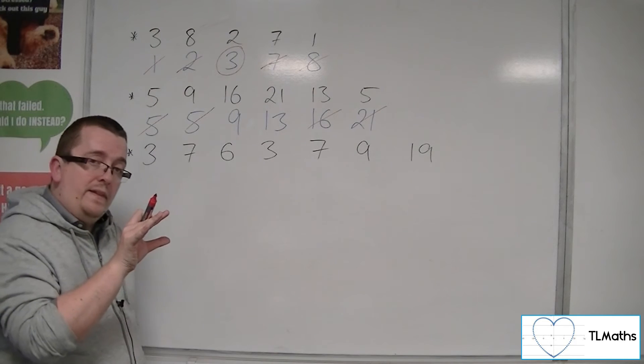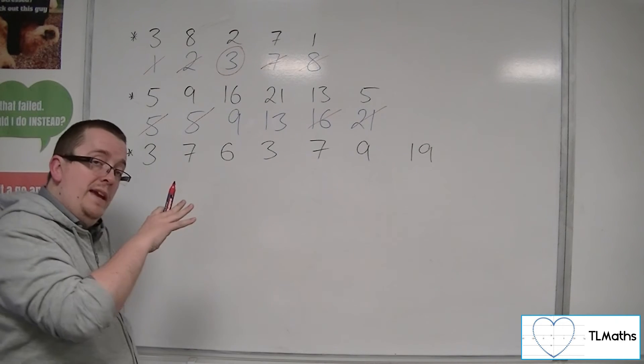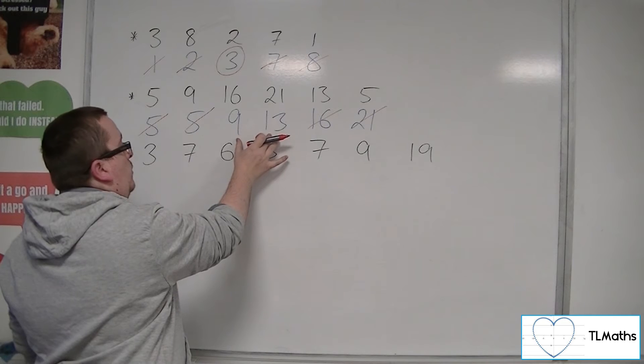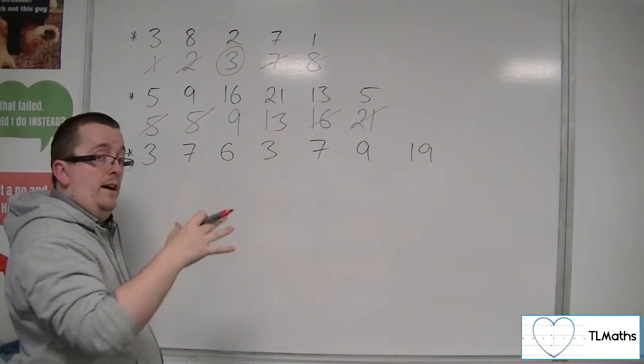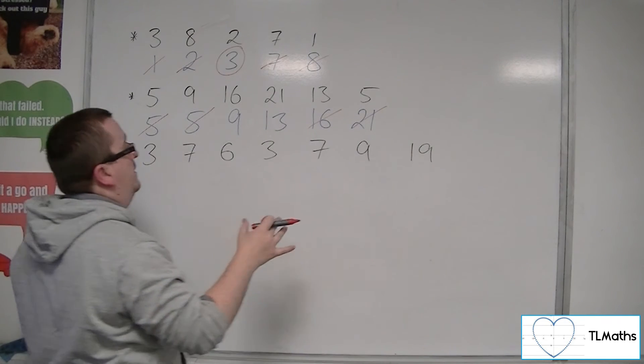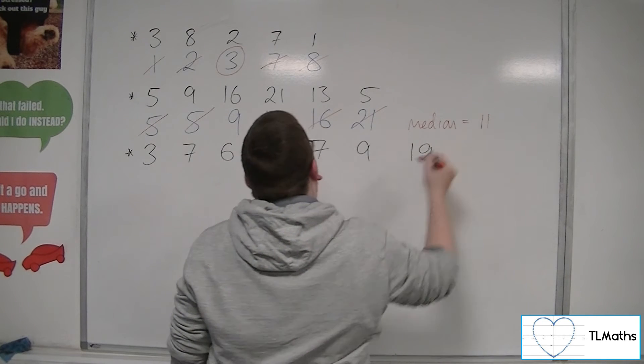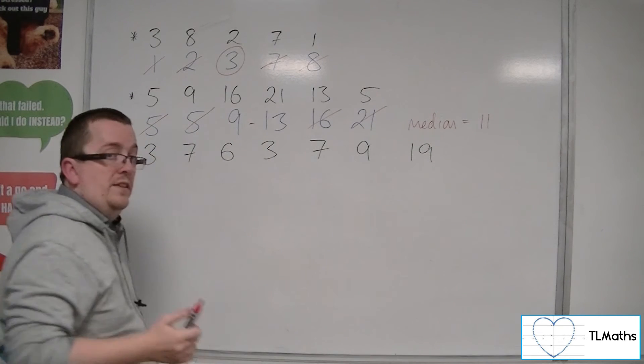Now one way of doing that, if you can't spot it initially, is to add the two numbers together, which is 22, and then halve that number. So 11. So the median here would be 11, halfway between the 9 and the 13.